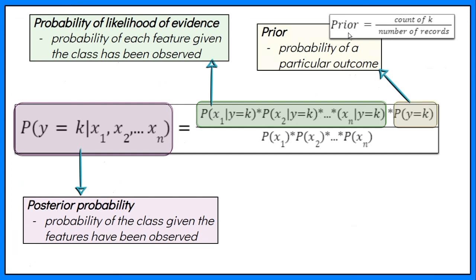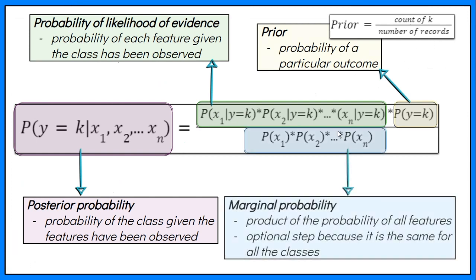Since all features are assumed to be independent of each other, we can multiply the likelihoods of all features and call it the probability of likelihood of evidence. The second term is called the prior, which is the overall probability of a particular outcome. In simpler terms, prior is equal to the count of a particular outcome divided by the number of records. The marginal probability, or probability of evidence, that goes in the denominator is the product of the probability of all features. This is an optional step because the denominator is the same for all classes and so will not affect the probabilities.